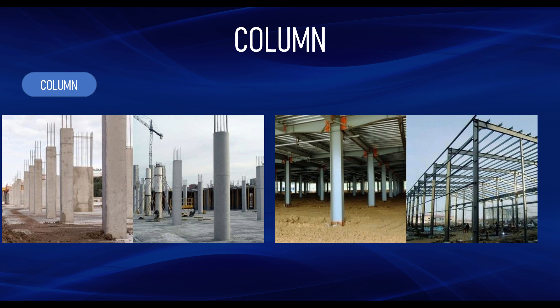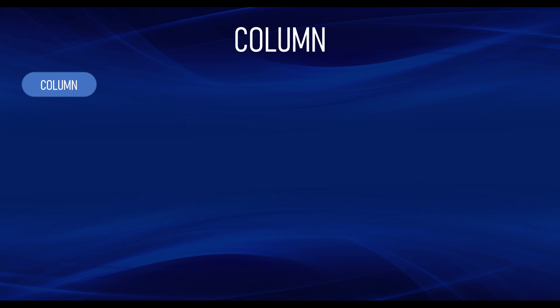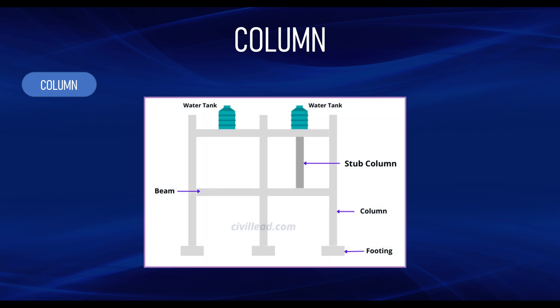Let's talk about the way in which columns transfer and absorb load from other structural members. In a general sense, the transfer of load is from the slab to the beam to the column. This is the case when we have a solid slab. But in the case of a flat slab where there is no beam at all, the load is transferred directly from the slab to the column.